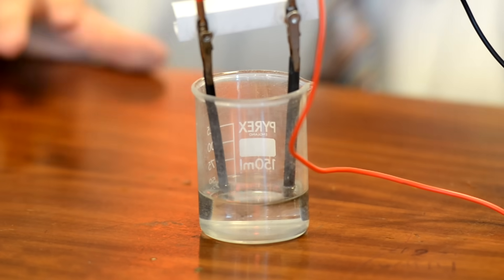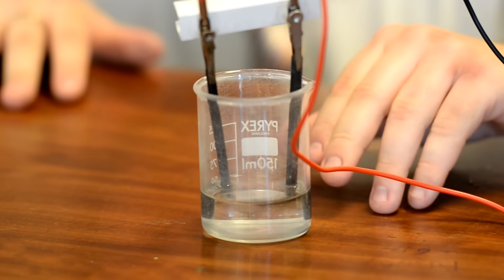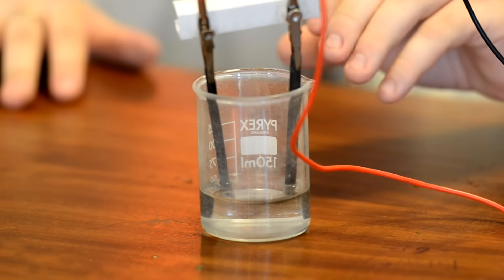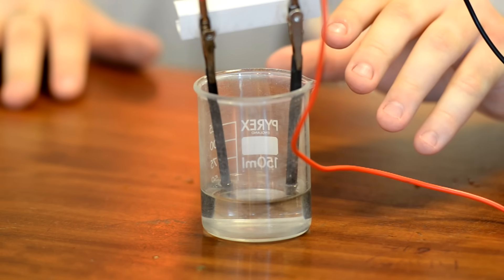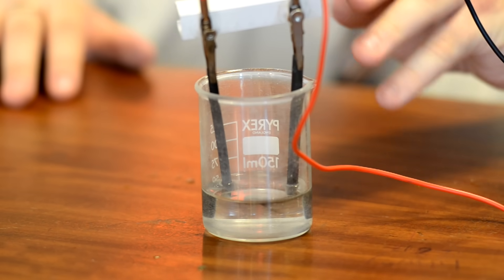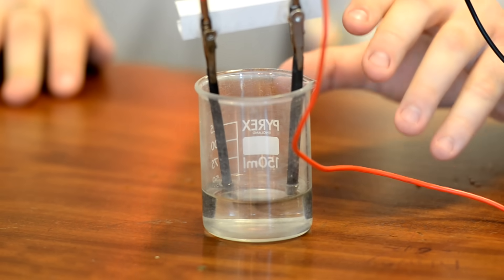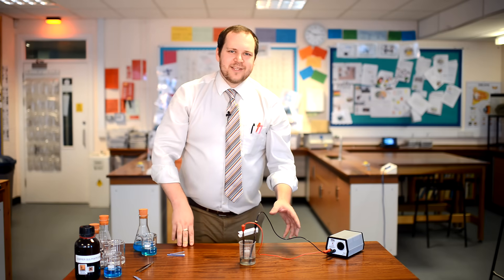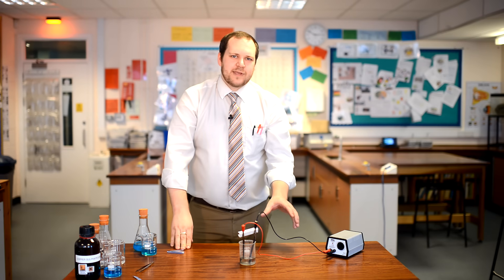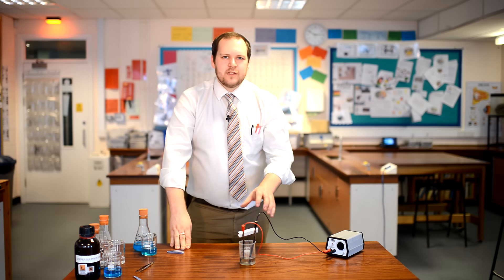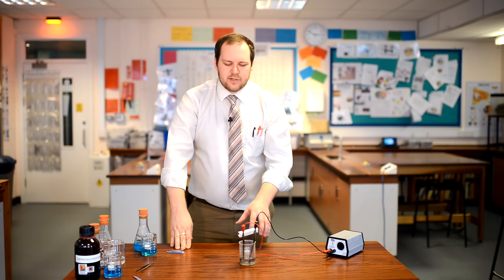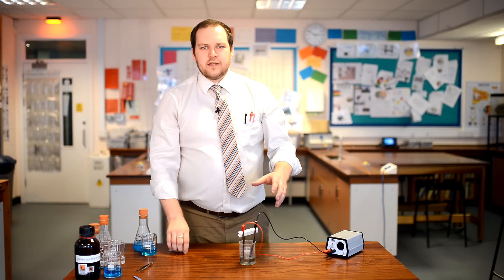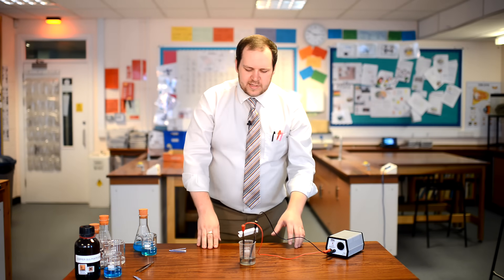Now this time we have got bubbles forming at both electrodes. At the negative electrode, we have got hydrogen forming. Now the hydrogen formed in this experiment won't be enough to actually test it via our usual pop test. However, this time we have got oxygen formed. Where something is less reactive than the chlorine or the halide ions, we get oxygen formed instead of the sulphate ions which will stay in solution. They will react and bond with the sodium ions and stay in solution.